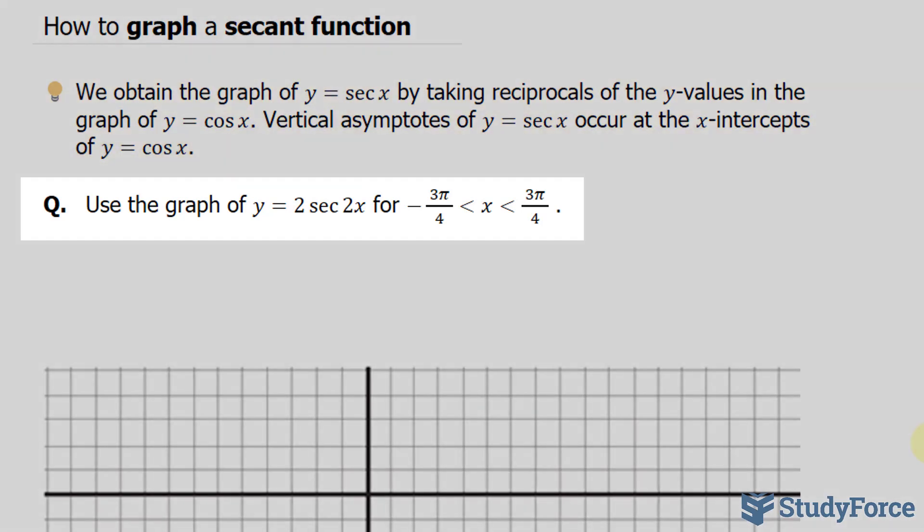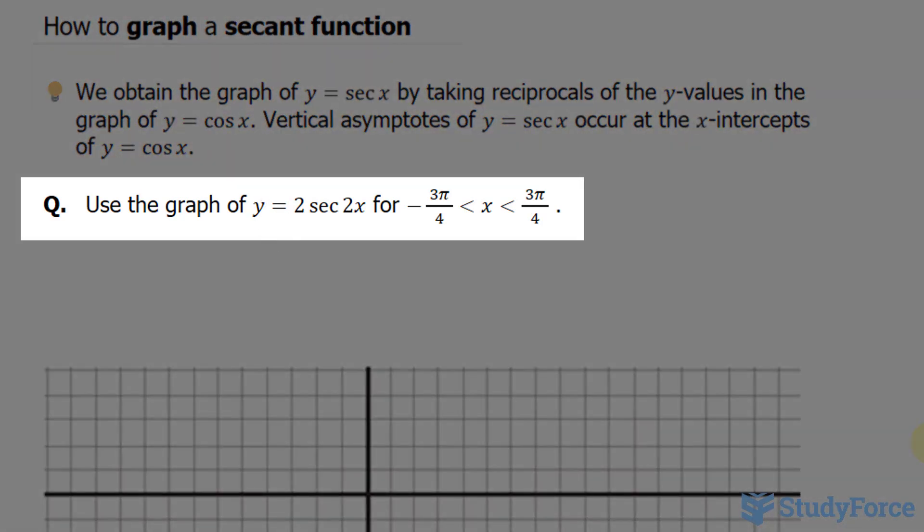The question reads: graph y equals 2 secant 2x for the intervals negative 3π over 4 and positive 3π over 4.